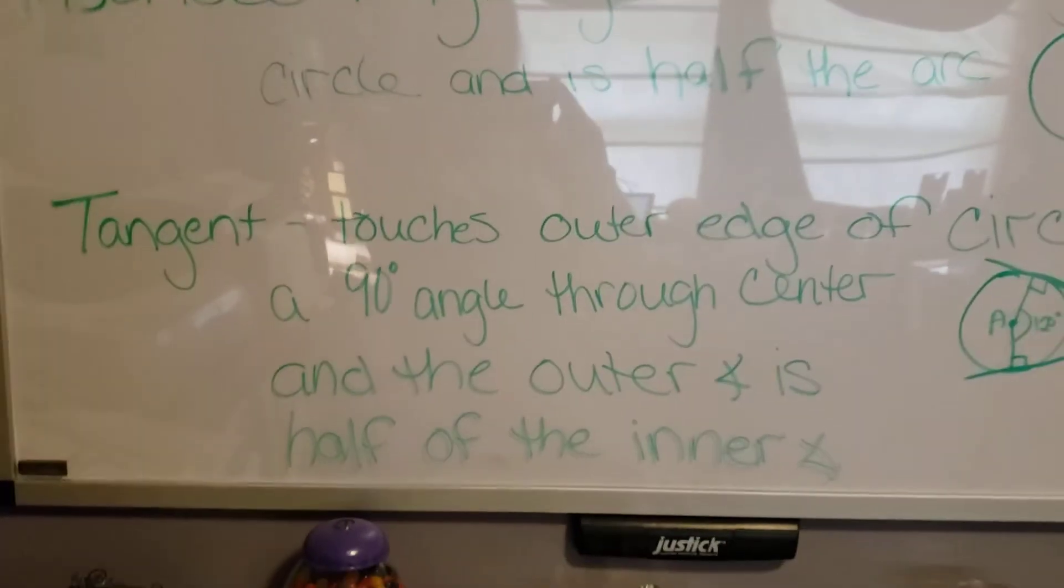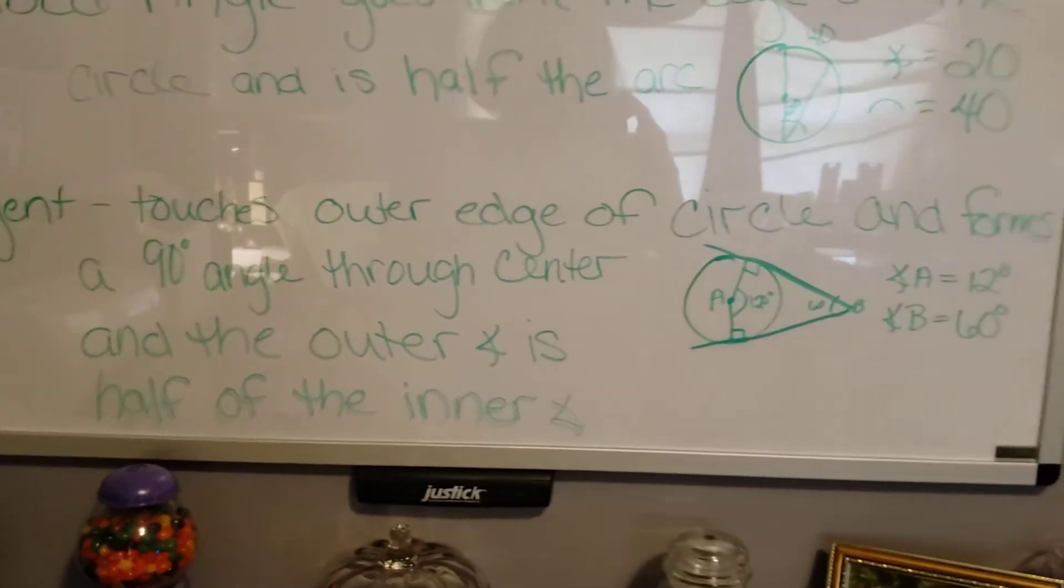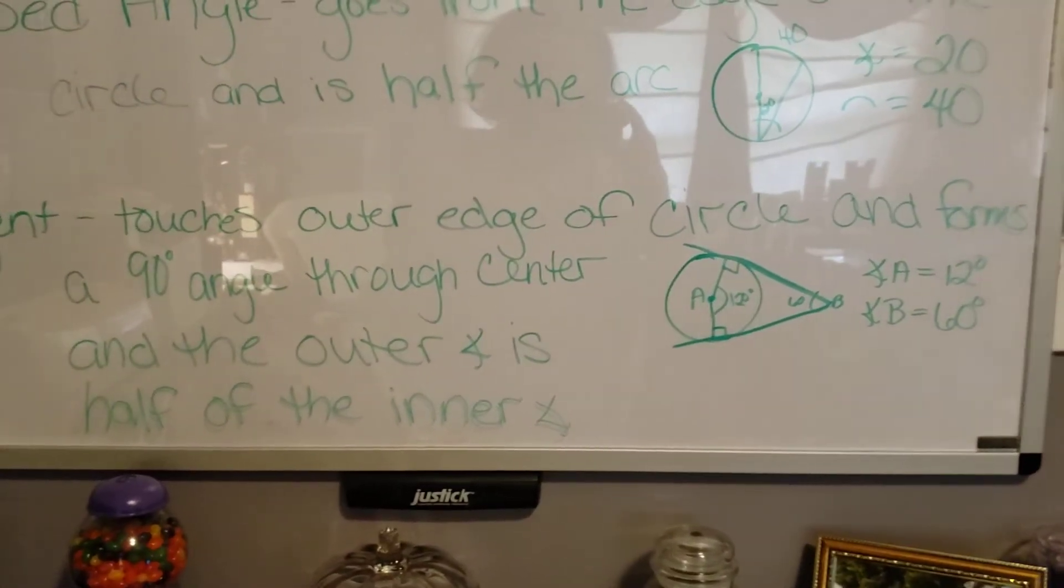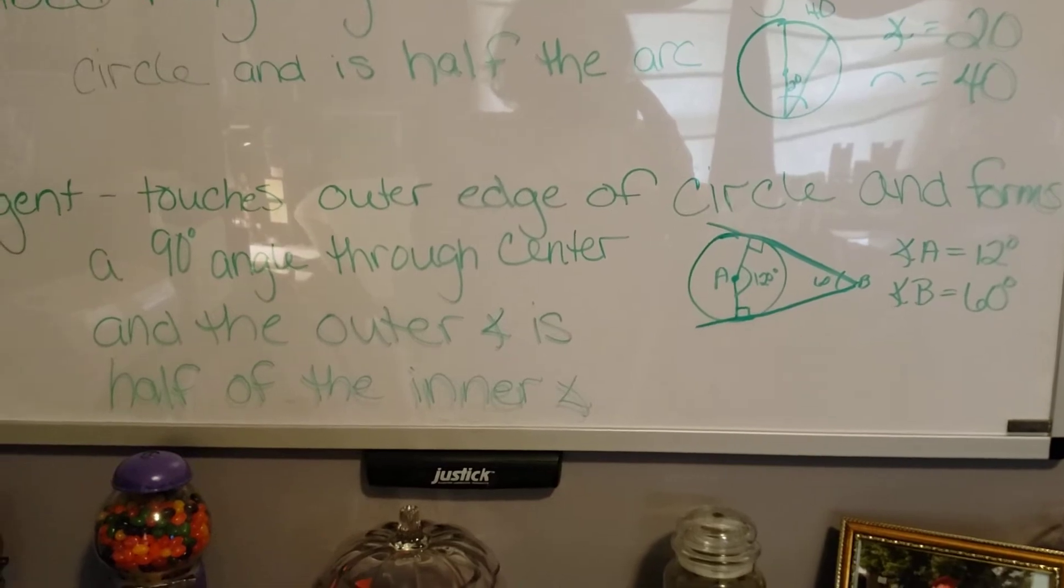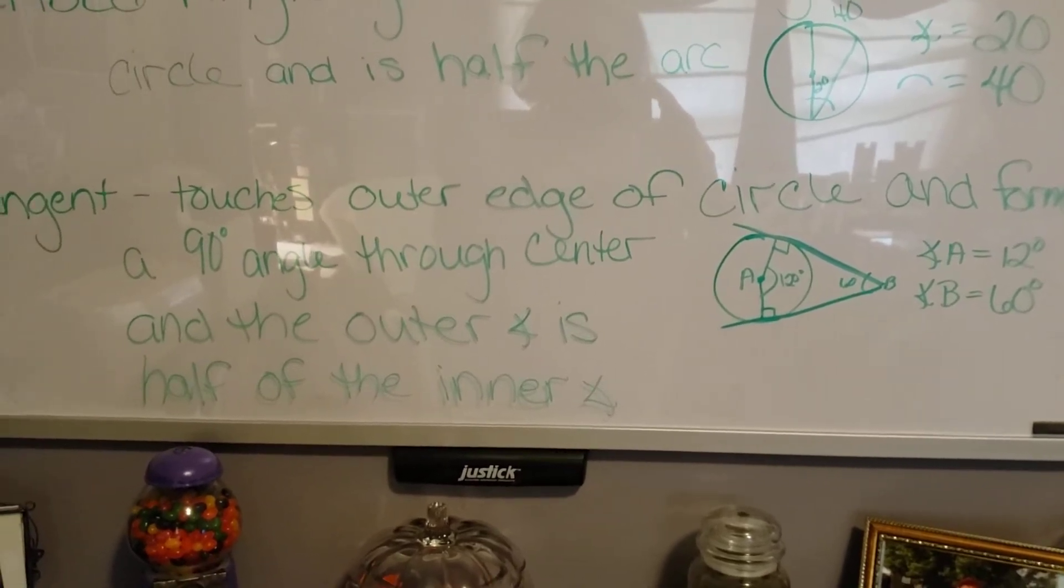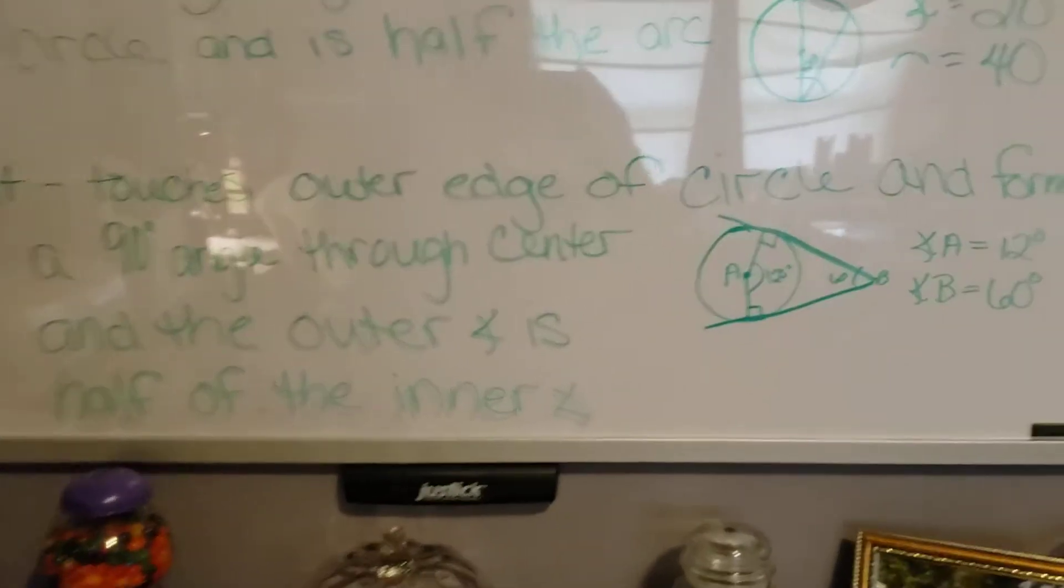Then you have tangent. A tangent touches the outer edge of the circle and forms a 90 degree angle through the center and the outer angle is half of the inner angle.